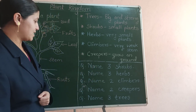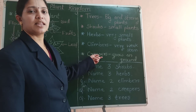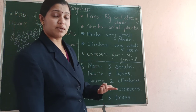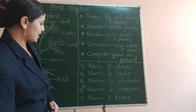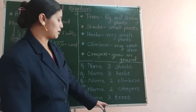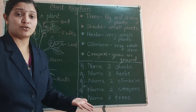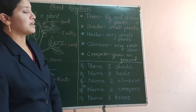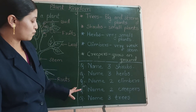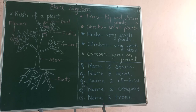The next question is name 2 creepers. Creepers are plants that grow on the ground. Examples are watermelon, pumpkin and bottle gourd. The last question is name 3 trees. You can write coconut tree, mango tree, peepal tree, neem tree, jackfruit tree or banyan tree. That is your homework for today. Good evening, thank you.